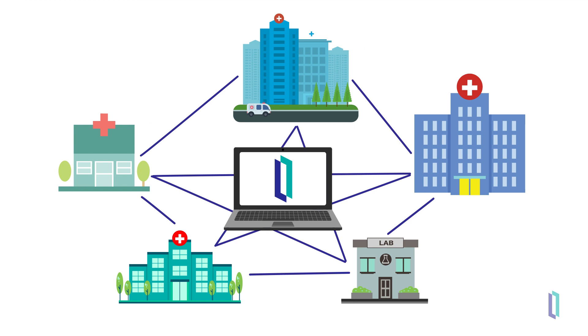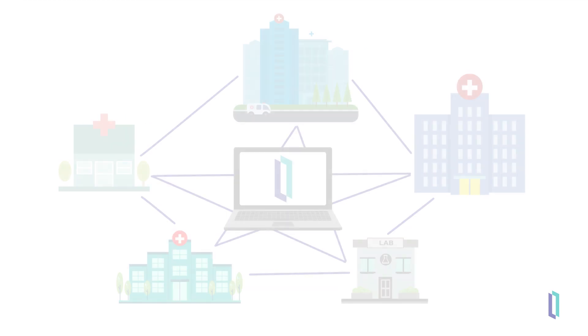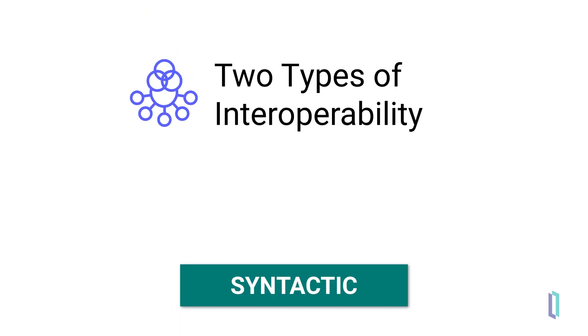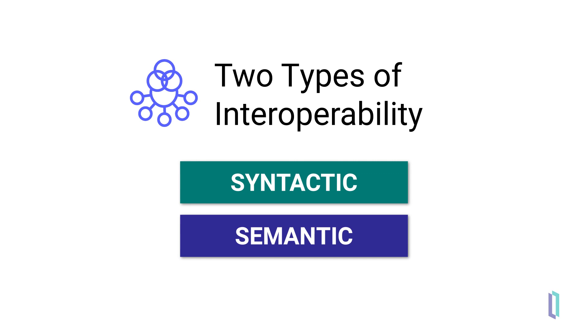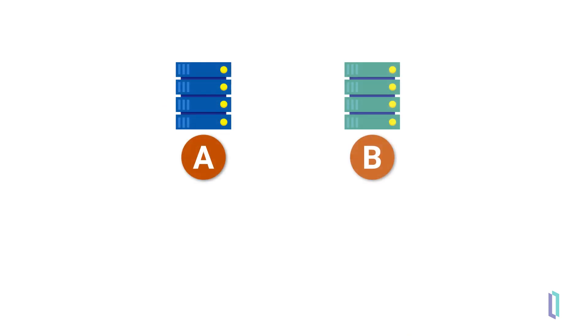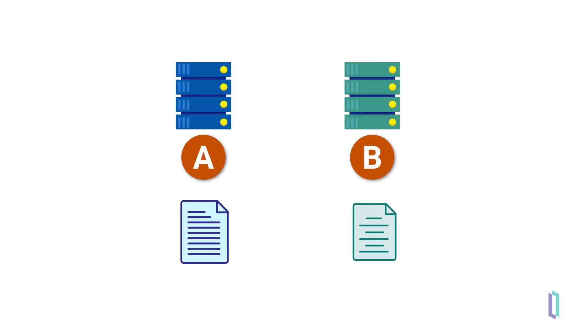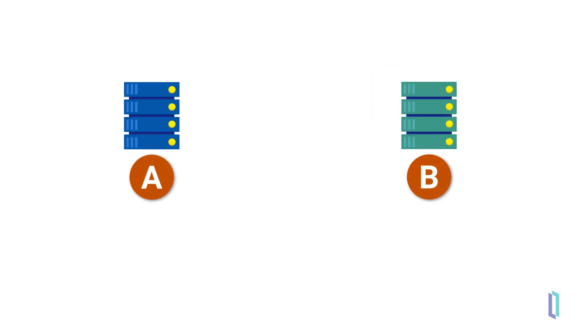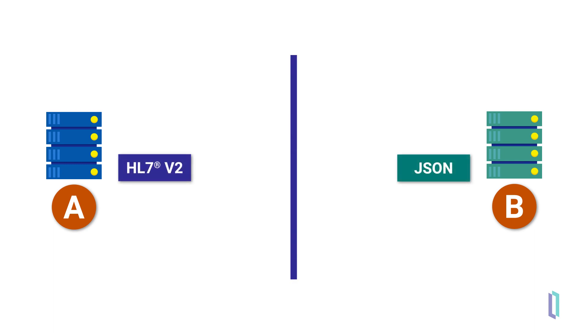As we look more closely at the challenges of connecting systems and facilities, we will distinguish two types of interoperability: syntactic and semantic. Syntactic interoperability, where the structure of a message is defined but the meaning is not, makes it possible for systems to send and receive data in different formats. Without this, systems cannot communicate effectively.